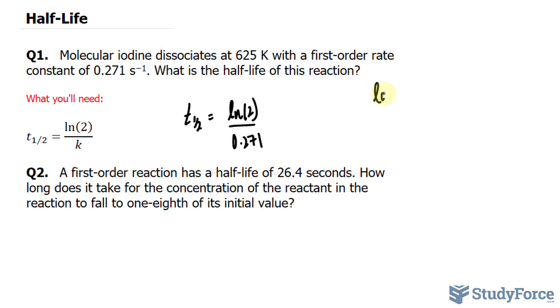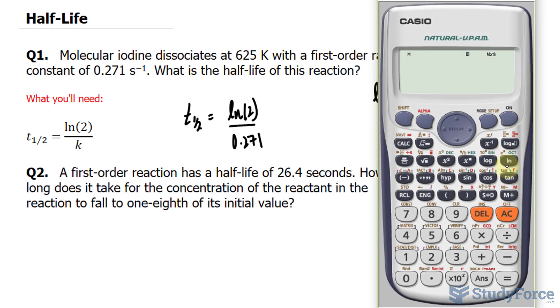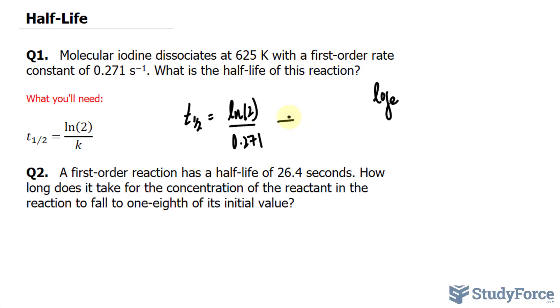ln is a replacement symbol for log of base e. So using our calculator, I'll type in ln 2 divided by 0.271 and we should round this number off to three significant figures so it becomes 2.56. Therefore, the half-life of this reaction is 2.56 seconds.